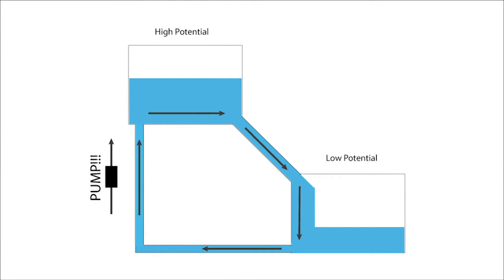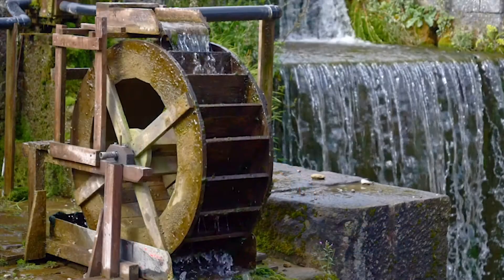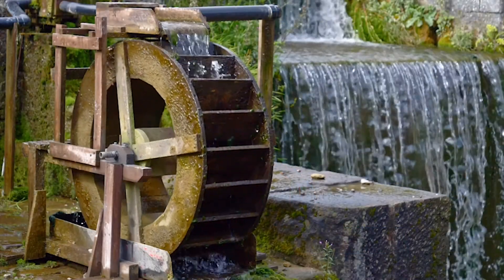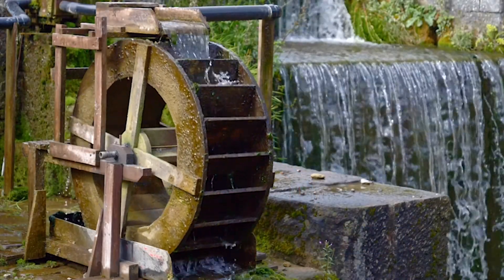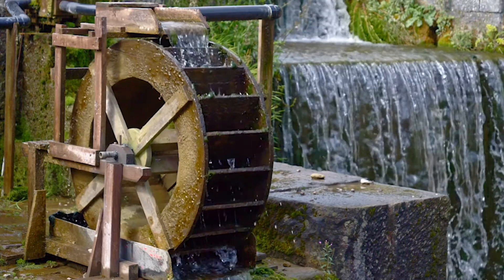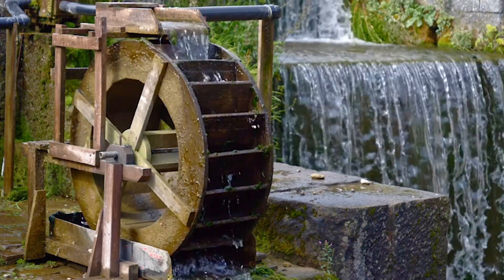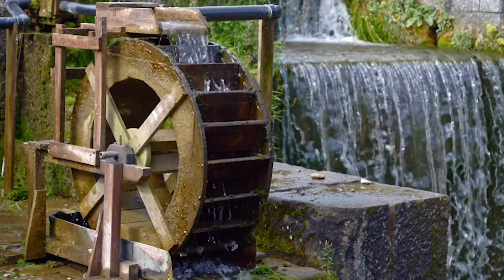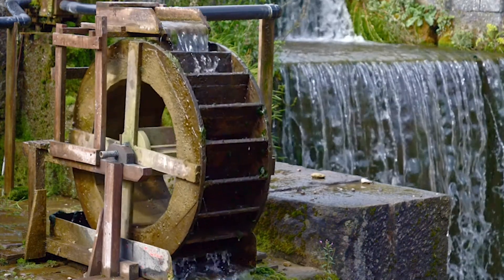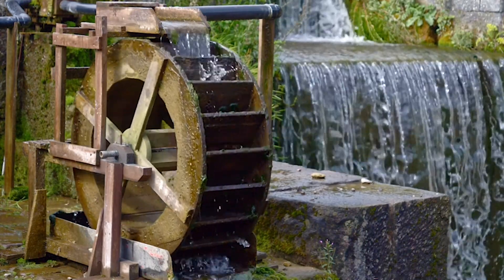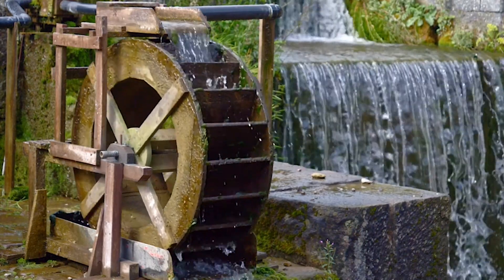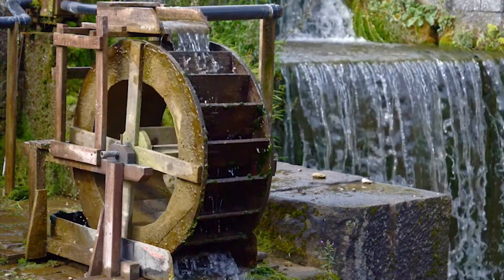Water in the higher tank has a higher energy potential due to gravity. It flows down to the lower elevation, giving up energy in the process, because it loses the energy provided by gravity through losing elevation.